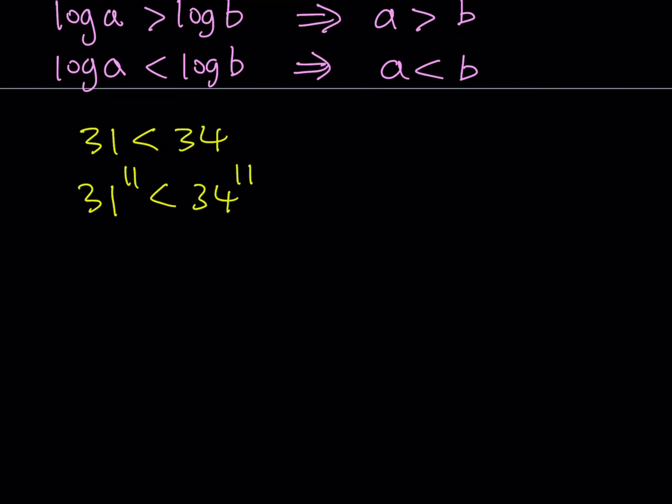So this comparison is true, but what does that have to do with our expression 17 to the 14th? So here's where the expression kind of unfolds. I can write this 34 as 2 times 17 and raise it to the 11th power. And this means 2 to the 11th multiply by 17 to the 11th power. Now I want to compare this to 17 to the 14th power.